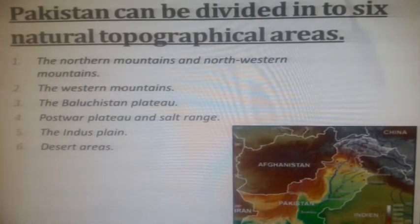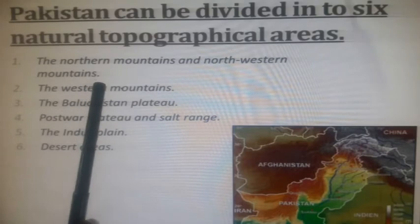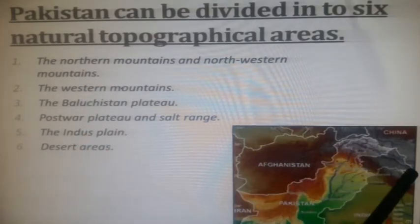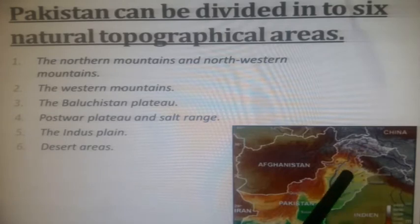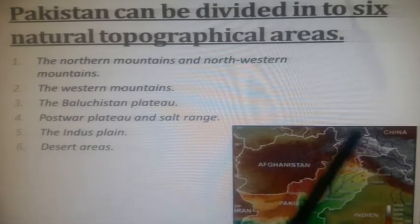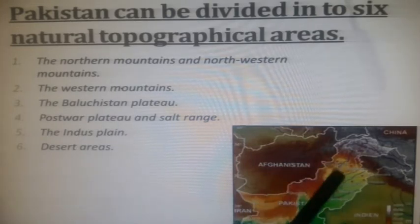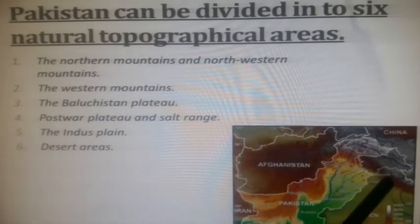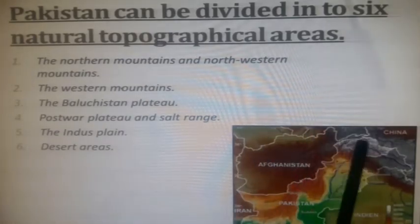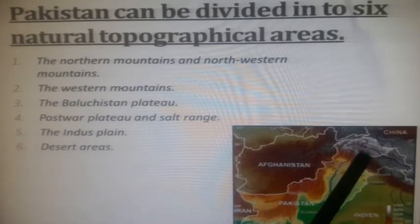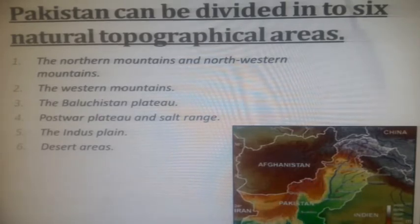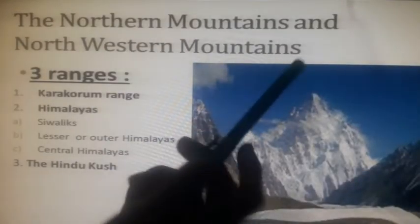The land of Pakistan can be divided into six natural topographical areas: the northern mountains, the northwestern mountains, the western mountains, the Balochistan plateau, the Potwar plateau and the salt range, the Indus Plains, and the desert areas. Keeping the map of Pakistan in mind, it will be easy to remember these six areas.